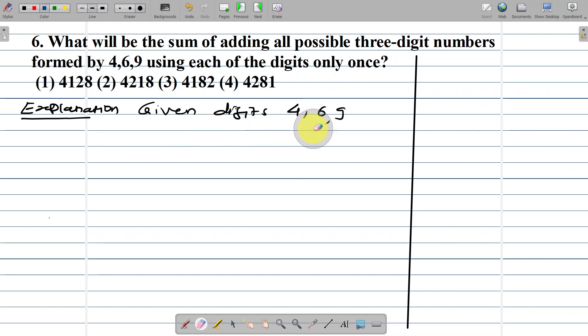When adding any given digits like 4, 6, and 9, using each digit only once, the possible numbers are: 469, 496, 649, 694.